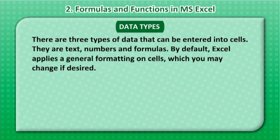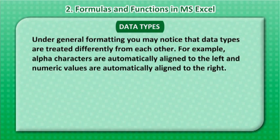Data Types: There are three types of data that can be entered into cells — text, numbers, and formulas. By default, Excel applies a general formatting on cells which you may change if desired. Under general formatting, you may notice that data types are treated differently — alpha characters are automatically aligned to the left and numeric values are automatically aligned to the right.